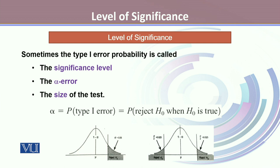It is denoted by alpha, where alpha is the probability of committing type 1 error — which is the probability of rejecting H0 when H0 is true. In the pictures, we can notice that the shaded region is determined for alpha levels, for one-tailed test and two-tailed test.